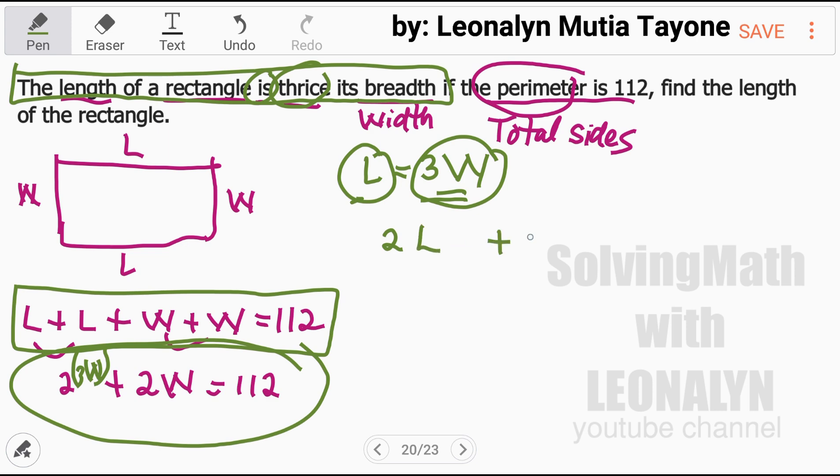2L plus 2W equals 112. L is 3W. Let's substitute. So this is now the equation for this problem, and we can now solve it. Let's solve for the value of W here.